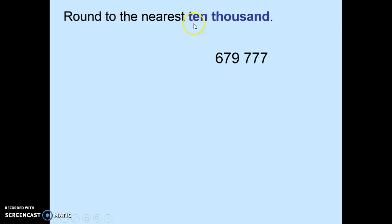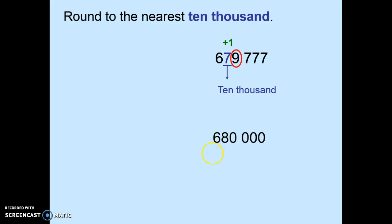In this example we have to round to the nearest 10,000. Underline the digit in the 10,000th place and circle the number immediately to the right. We know that nine makes us give one to the digit in the 10,000th place. Replace all numbers to the right with zeros and the numbers before the 10,000th place stay the same. Your answer is 680,000.